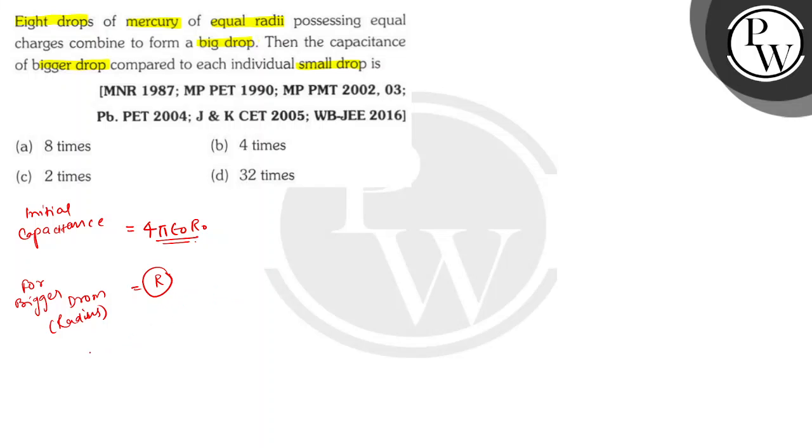Total volume of mercury is same, therefore V₀ equals to V because the volume will remain constant.